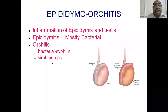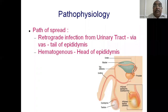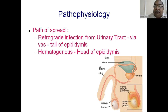Viral disease does not spread to the epididymis. Regarding pathophysiology, the path of spread is usually a retrograde infection from the urinary tract. From the urethra, through the ejaculatory ducts, the vas deferens is infected, and from there the tail of the epididymis is infected. When spread is hematogenous, it is the head of the epididymis that is infected first, because of its better blood supply.